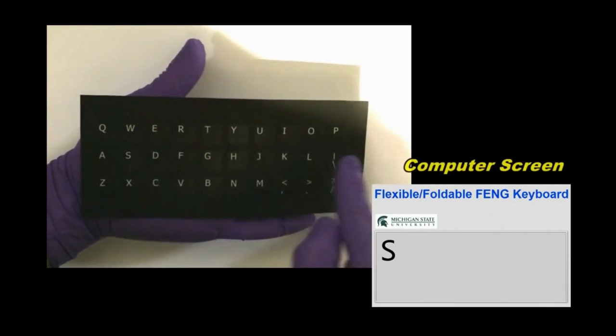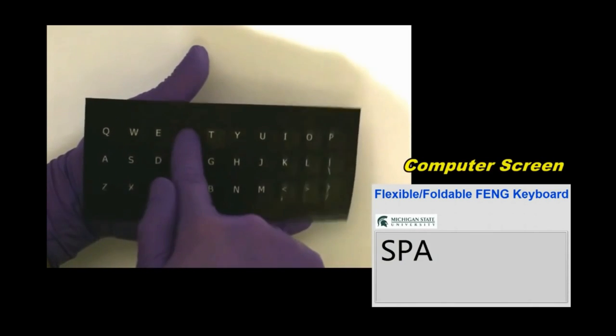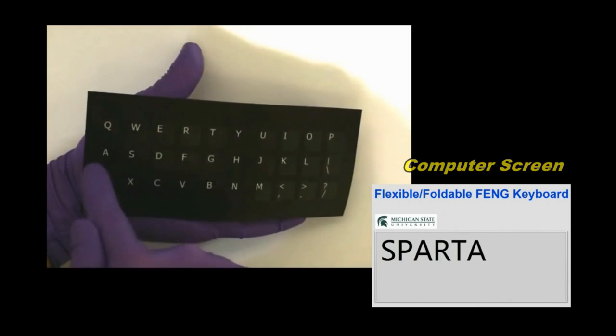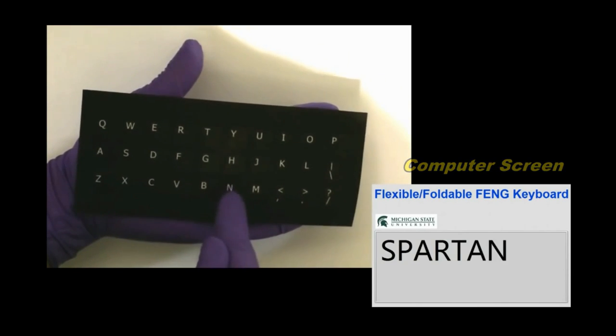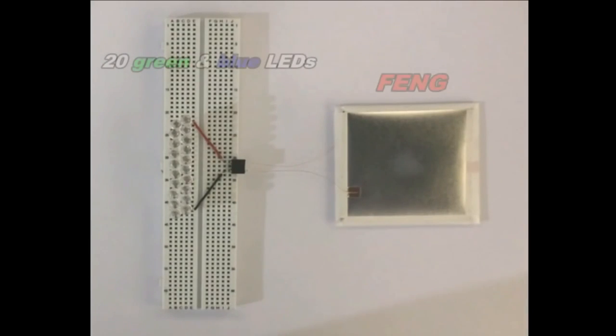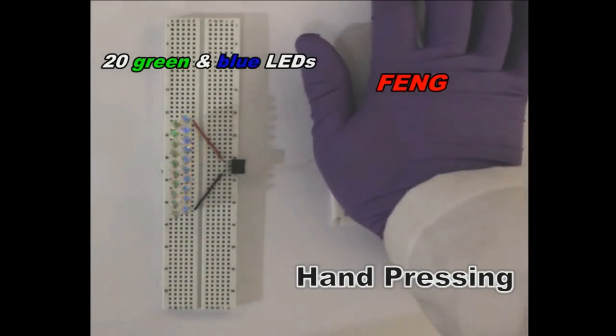The completed device is called a biocompatible ferroelectric nanogenerator, or FENG. The device is as thin as a sheet of paper and can be adapted to many applications and sizes. The device used to power the LED lights was palm-sized, for example, while the device used to power the touchscreen was as small as a finger.